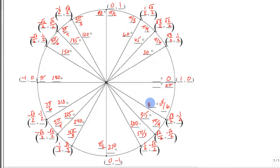315, 330, 360, and then we better put zero degrees in also. And that's it. That's the unit circle.